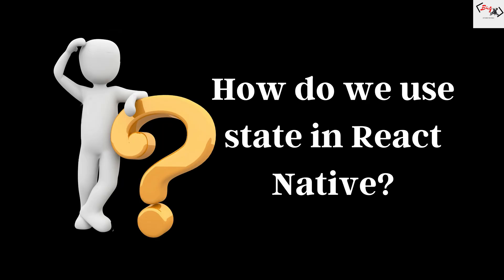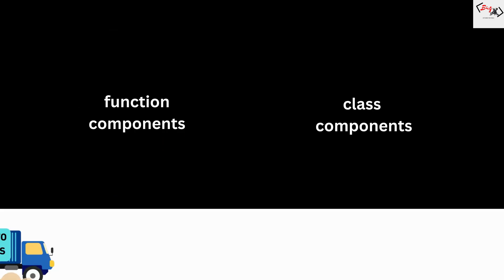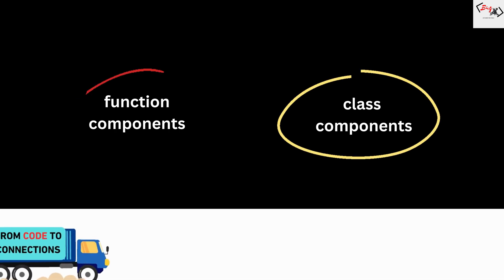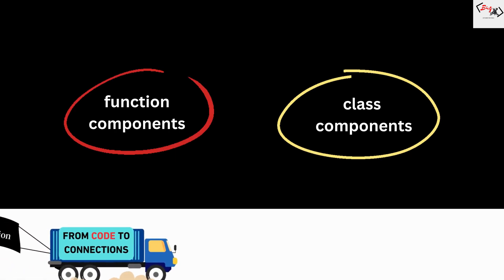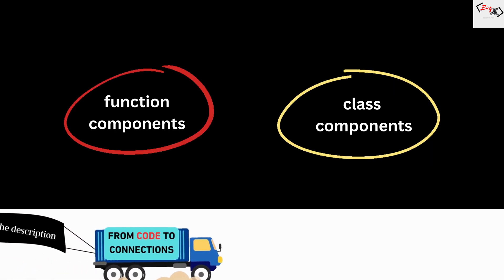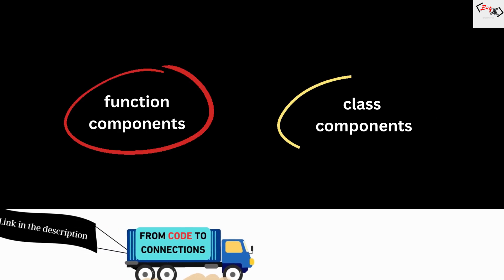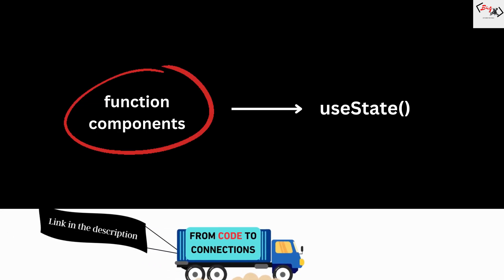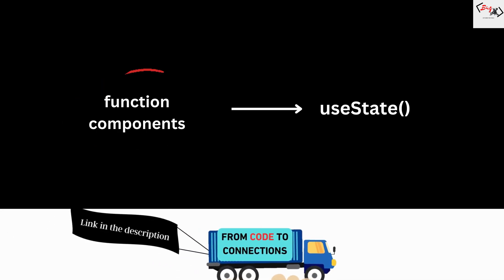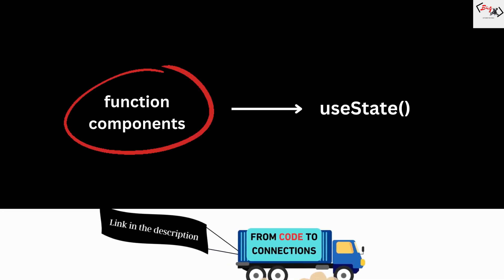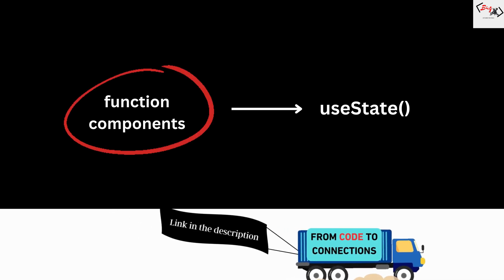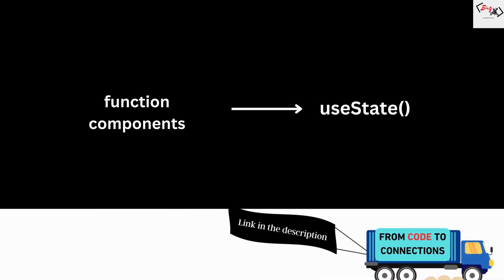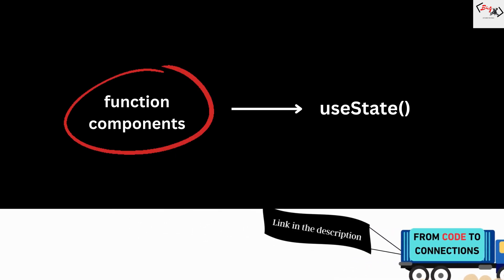So how do we use state in React Native? There are two ways to define and manage state depending on whether you are using function components or class components. If you are using function components, which are recommended by the React team, you can use the useState hook to create and update state.